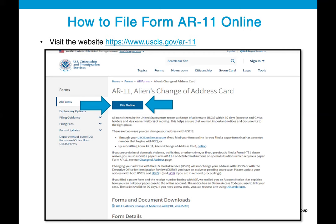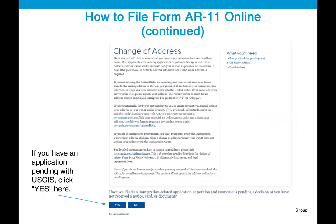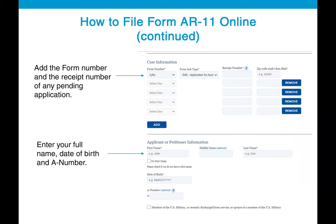How do you file a change of address form AR-11 online? First, visit the following website, which will take you to a page where you click the blue button that says 'File Online.' That will take you to a notification page; if you have an application pending with USCIS, click yes. For each pending application, add the form number and receipt number of that application. You can refer to the receipt notice documents for that information. Then enter your full name, date of birth, and A number.